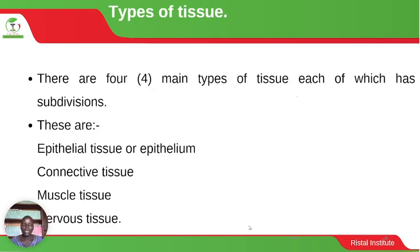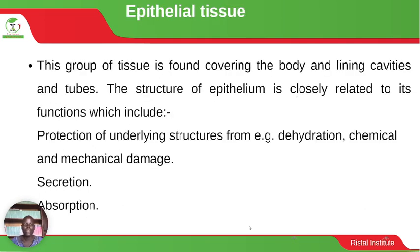Let us look at types of tissues. There are four main types of tissue, each of which has subdivisions. The four types include: epithelial tissue, connective tissue, muscle tissue, and nervous tissue. Let's start by looking at epithelial tissue.